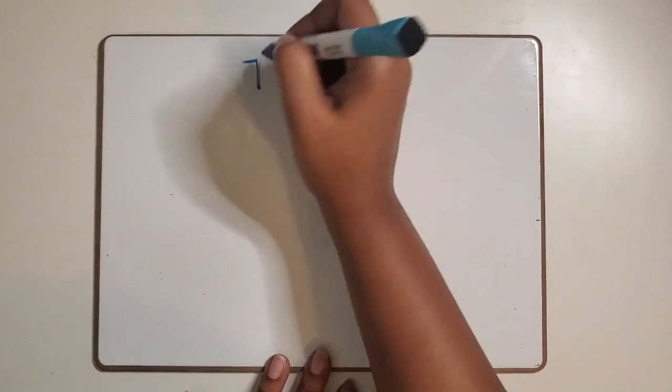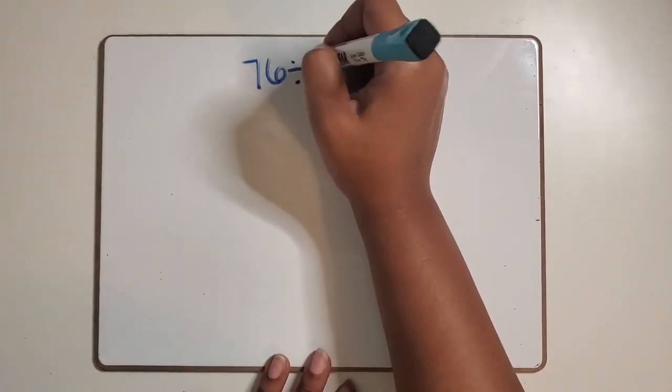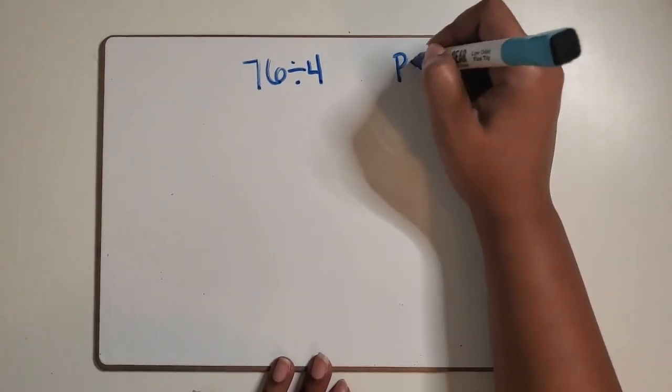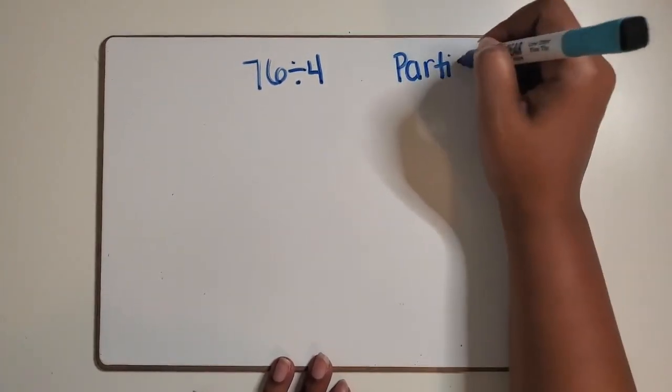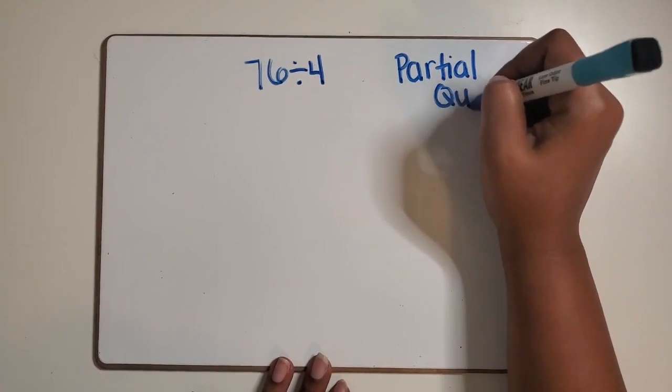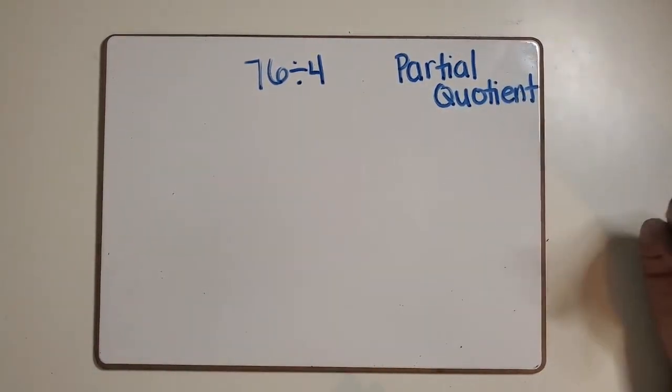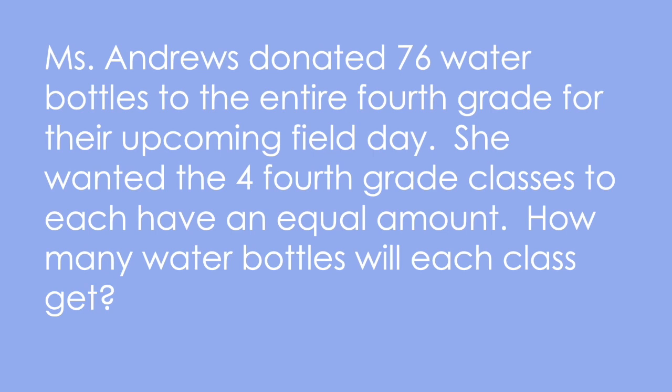We're going to take 76 and divide it by 4 using a division strategy known as the partial quotient. Before we solve this expression, we're going to look at it in context using the following word problem.